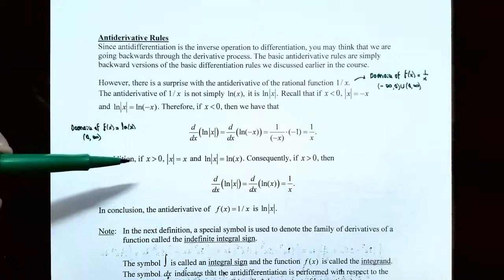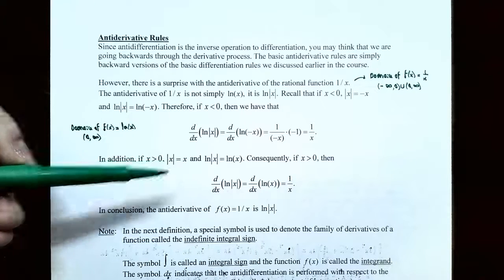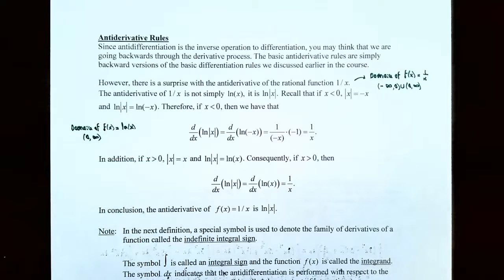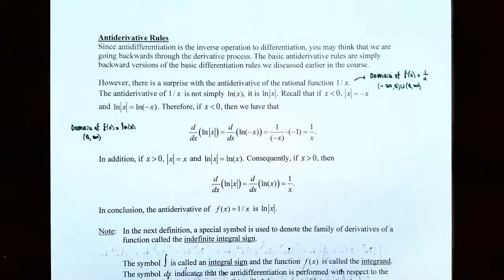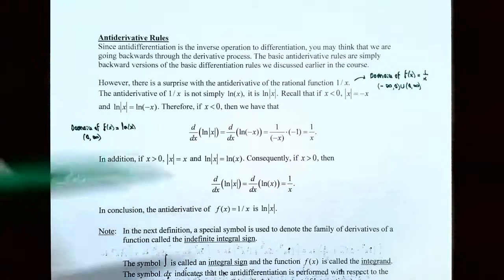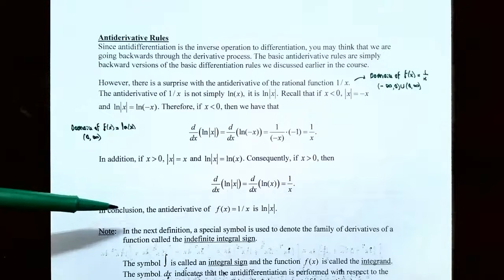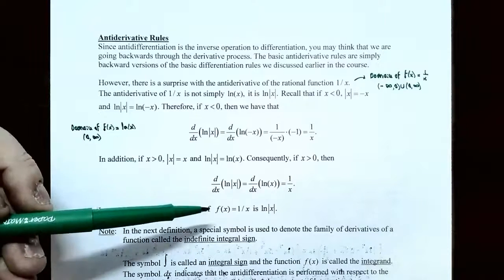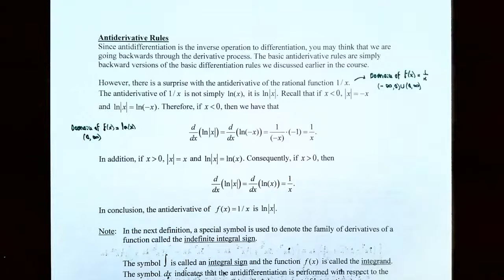On the other hand, if x is positive, then the absolute value of x is just x itself — for example, the absolute value of 7 is 7. So natural log of |x| becomes natural log of x, and if x is greater than 0, the derivative of natural log of |x| is the derivative of natural log of x, which we know is 1/x. So in conclusion, the antiderivative of f(x) = 1/x is natural log of the absolute value of x.